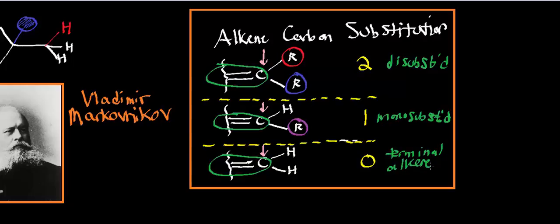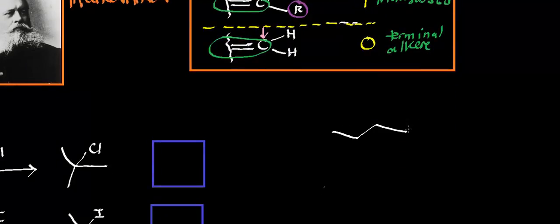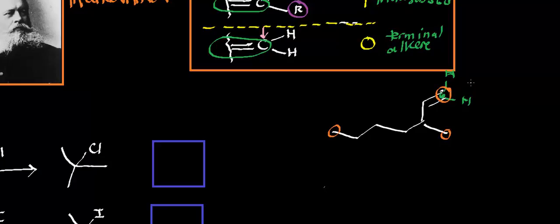And why is it terminal? Well, look at a compound like this — where the double bond is right here and notice it has two hydrogens right there on it. We would say that carbon right there has zero substitutions. But notice that in terms of what we call ends of the molecule, here's one end of the molecule, there's another end, and it can actually have more than that. Since that alkene is on one of the ends of the molecule, it's termed a terminal alkene.